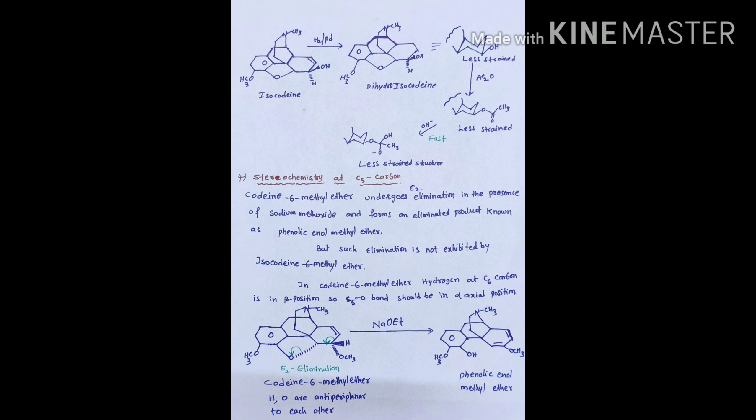The proof for this is obtained by the saponification of the acetates of dihydrocodine acetate and dihydroisocodine acetate. These are obtained by the acetylation of dihydrocodine and dihydroisocodine, which are in turn obtained by catalytic hydrogenation. Saponification of dihydrocodine acetate is a slow reaction, whereas the saponification of dihydroisocodine acetate is a fast reaction.